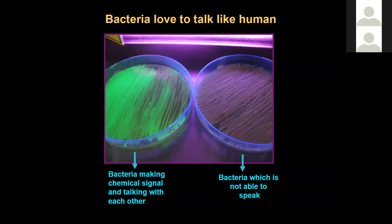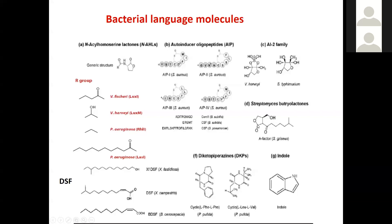Bacteria love to talk. This is the bacterial language seen in action in the lab. You can't listen to their action, but you can see it using different biosensors. On the left-hand side is a plate of bacteria glowing green by a green fluorescent protein hooked to a quorum sensing circuit — they are talking. On the right side, there are still many bacteria but they are not talking. The chemical molecules involved are diverse: the most common family includes acyl homoserine lactones, which have a lactone ring with different acyl R groups attached.